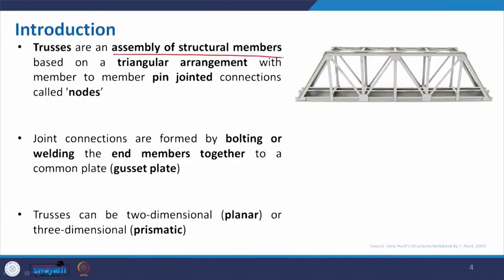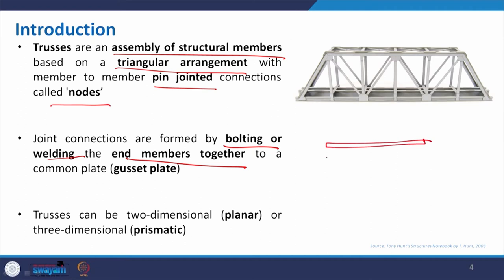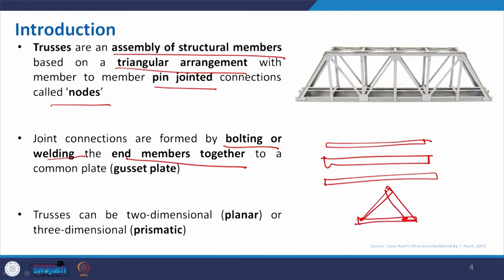Trusses are an assembly of structural members based on a triangular arrangement. They are pin-jointed members, and where they join they form nodes. The joint connections are formed by bolting or welding at the ends of members together with the gusset plate. When we arrange members — whether I-sections, wooden battens — in a triangular form, it makes it more rigid and stable. This is a truss.